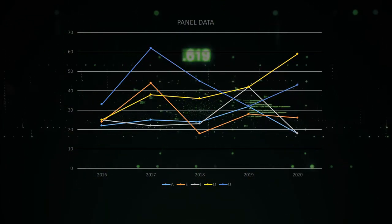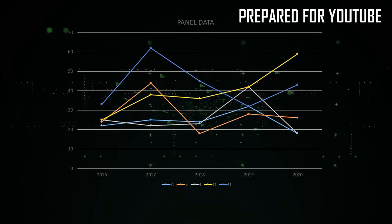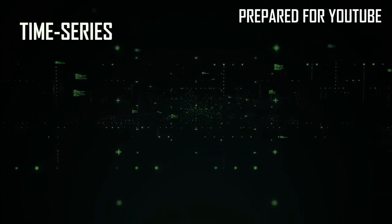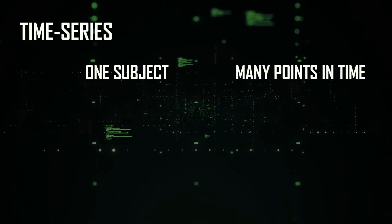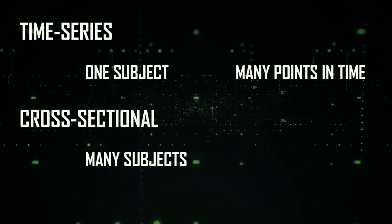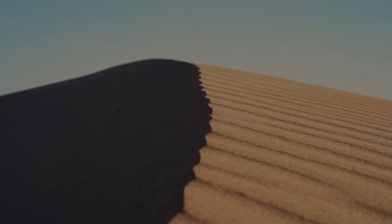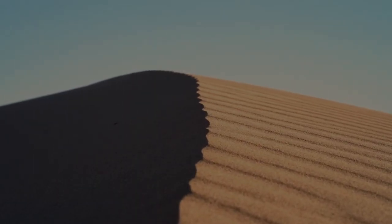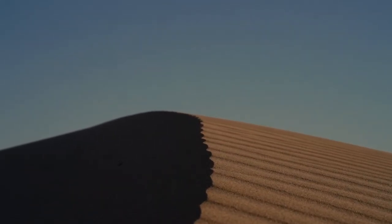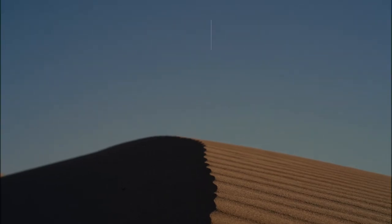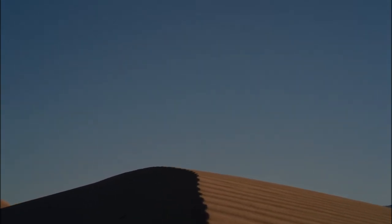I hope you understand the difference between time series and cross-sectional data. Time series: one subject, multiple time intervals. Cross-sectional: one point in time, multiple subjects. I could have given more examples, like temperature in one country over a period of time, or temperature in all countries in 2020 — you get the idea.